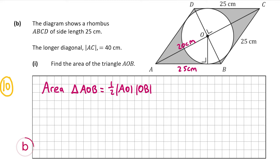It is a right-angled triangle, as the angle AOB is equal to the angle DOC due to opposite angles — so that's a right angle there. We can use Pythagoras's theorem to work out the length of the third side, and from that we'll get OB and be able to work out the area.